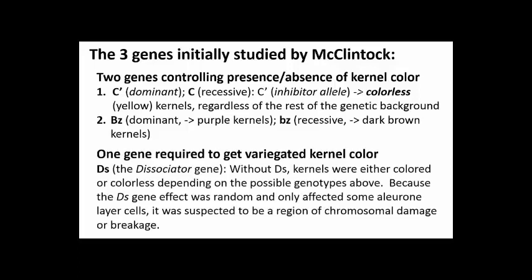In addition to the two strains that would produce either colorless or pigmented kernels, there were some strains that had a tendency to produce mosaic kernels. In these plants, a third gene called the DS gene was known to be responsible for the variegated seed color. DS is short for dissociator, because it was believed to be a region of unstable DNA. Mutation of this DNA in some aleurone cells, but not others, during seed development would account for the variegated — that is, striped or spotted — pigmentation in individual kernels.